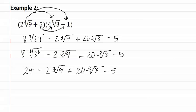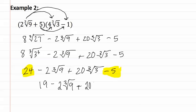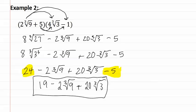This gives us twenty-four minus two cubed root of nine plus twenty cubed root of three minus five. We can now combine the first and the last: twenty-four minus five is nineteen, minus two cubed root of nine, plus twenty cubed root of three. None of these are like terms, so this is our final answer. Remember when you are multiplying binomial radical expressions to use FOIL and to simplify your answer.